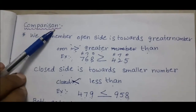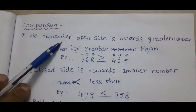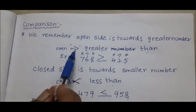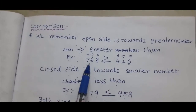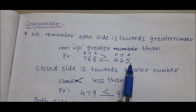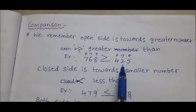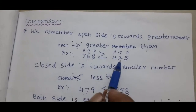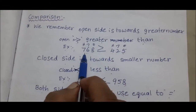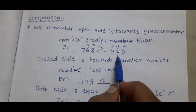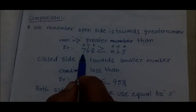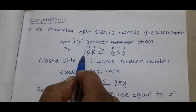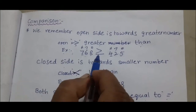Next topic: comparison. Remember, the open side is towards the greater number — this symbol is greater than. Example: 768 and 425. We compare digits — both are 3-digit numbers. We compare in hundreds place: 7 and 4. 7 is greater, so we keep the greater-than symbol: 768 > 425.